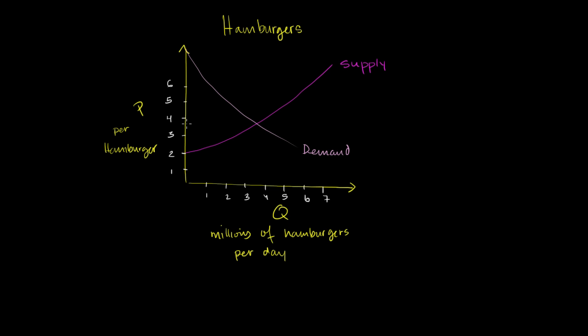The equilibrium price looks like it's about $3.75 per hamburger. And the equilibrium quantity looks like it's about 3.5 million hamburgers per day.